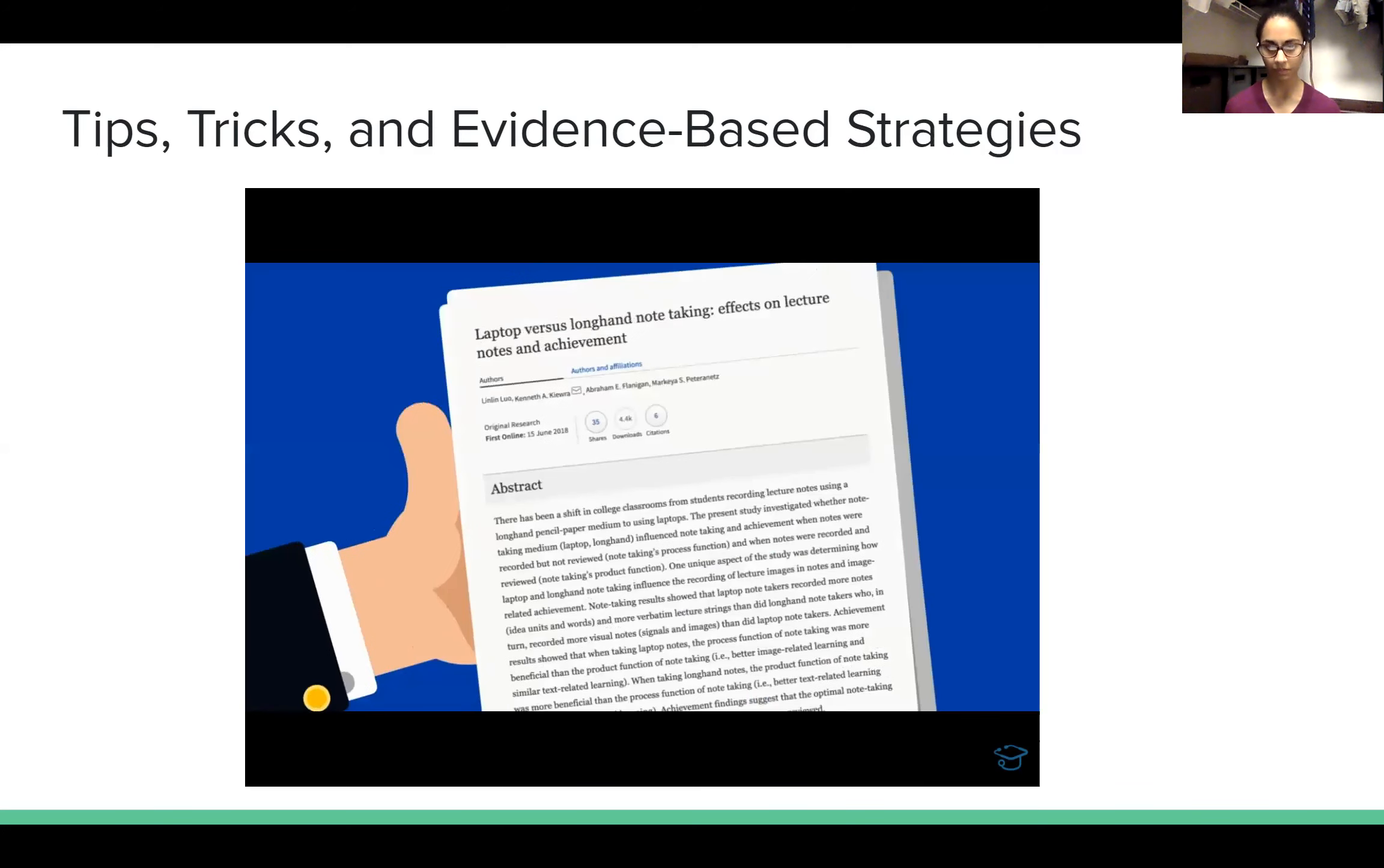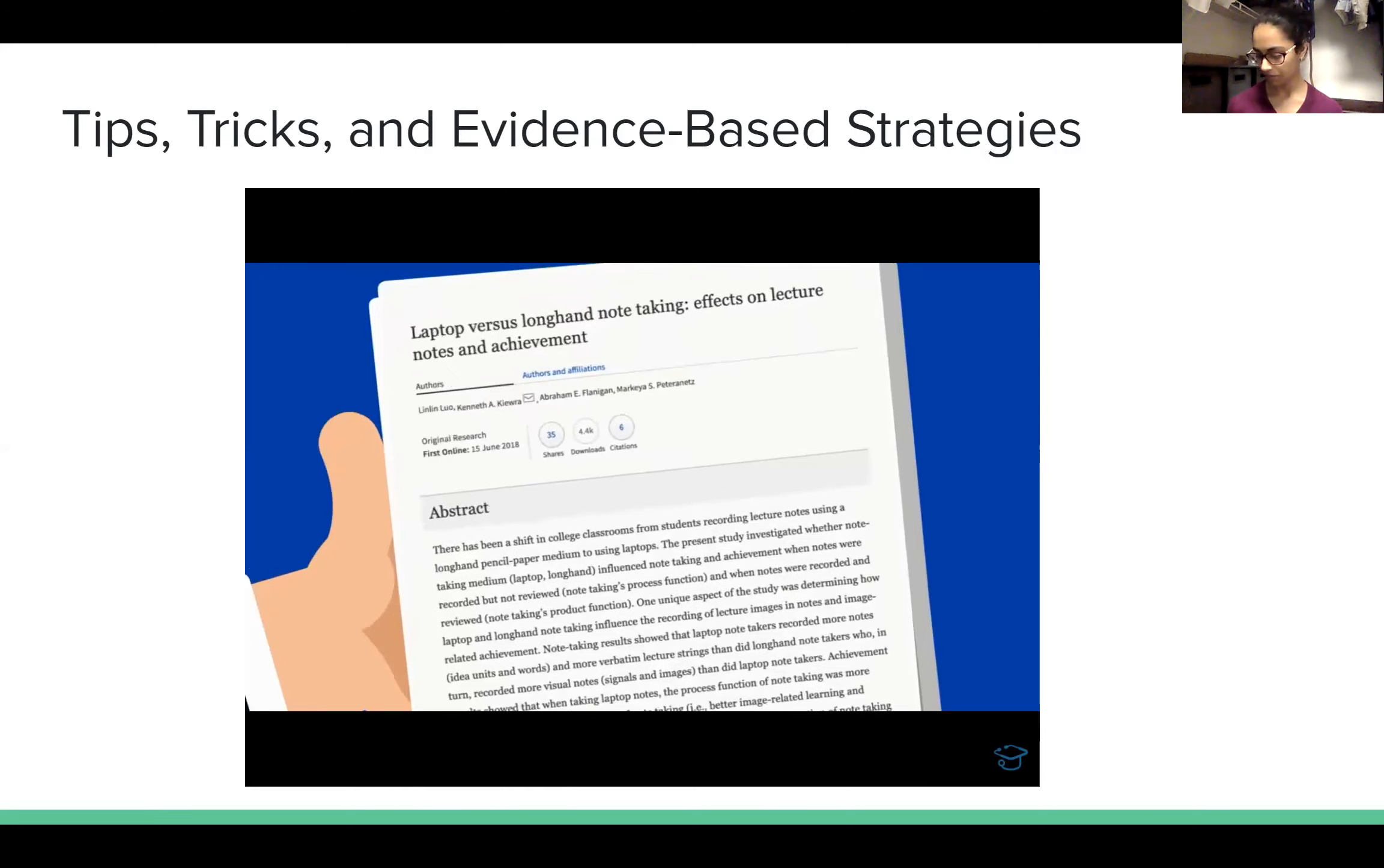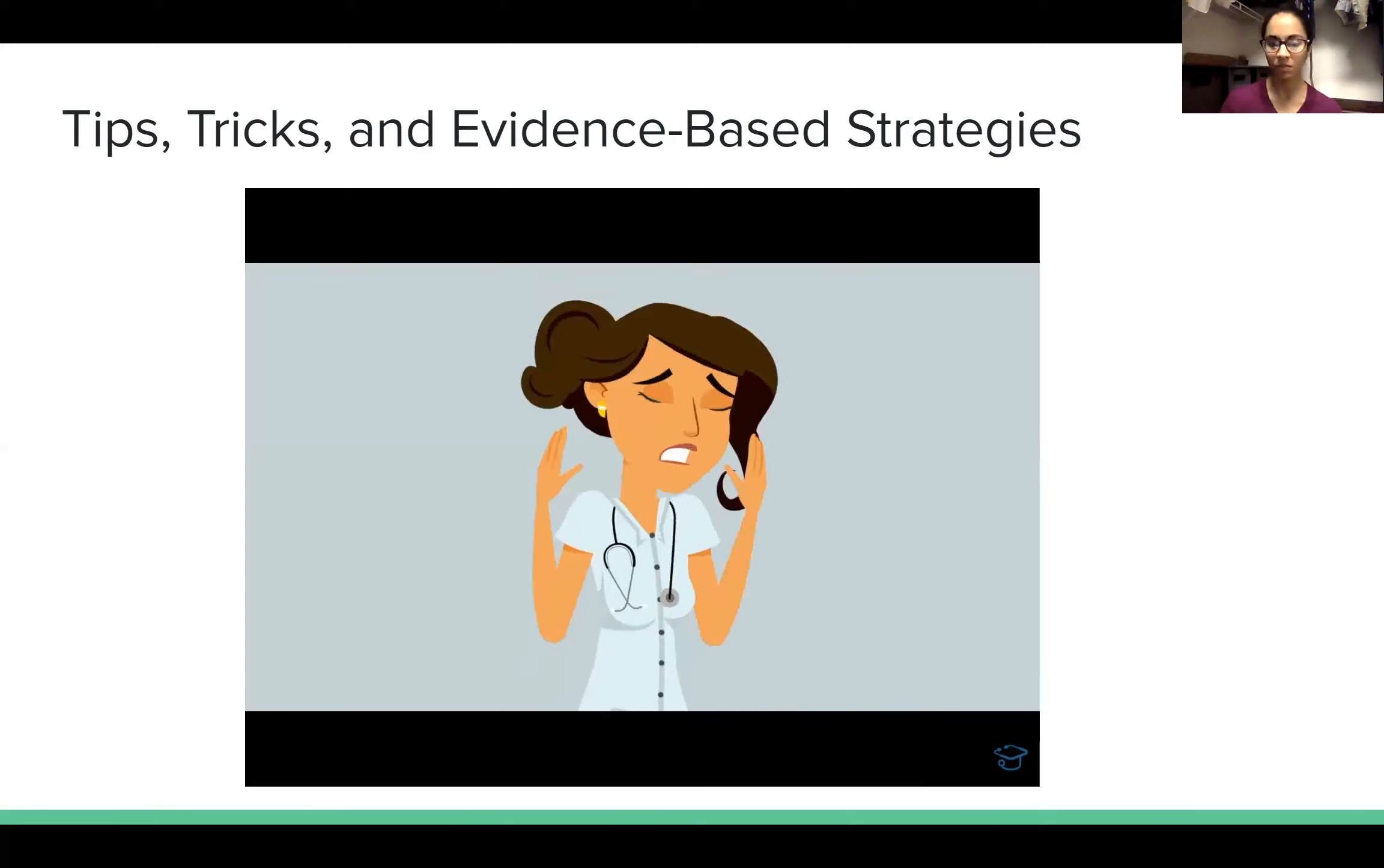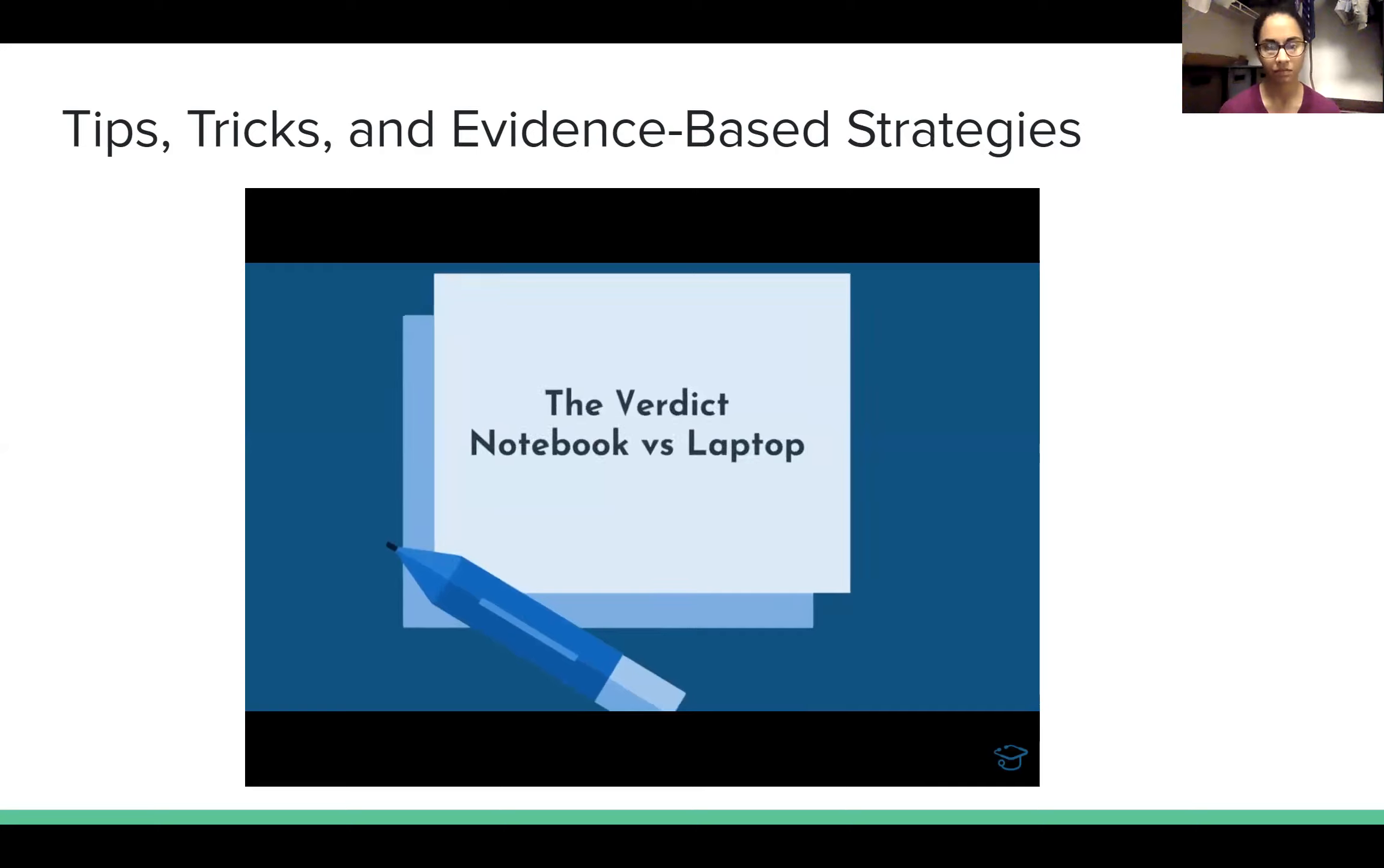Mueller and Oppenheimer found an advantage to handwritten notes with regards to conceptual testing, but no difference with regards to factual testing. When they did allow laptop and written note-takers to review their notes, the handwritten notes performed better in both factual and conceptual testing. Settled? Not yet. Dung and colleagues in 2012 found opposing results. Similarly, Fiorella and Mayer in 2017 showed that when allowed to study one's notes, those who used a laptop performed better on factual information recall. Perhaps these seemingly conflicting findings are best addressed by Luo et al. in 2018.